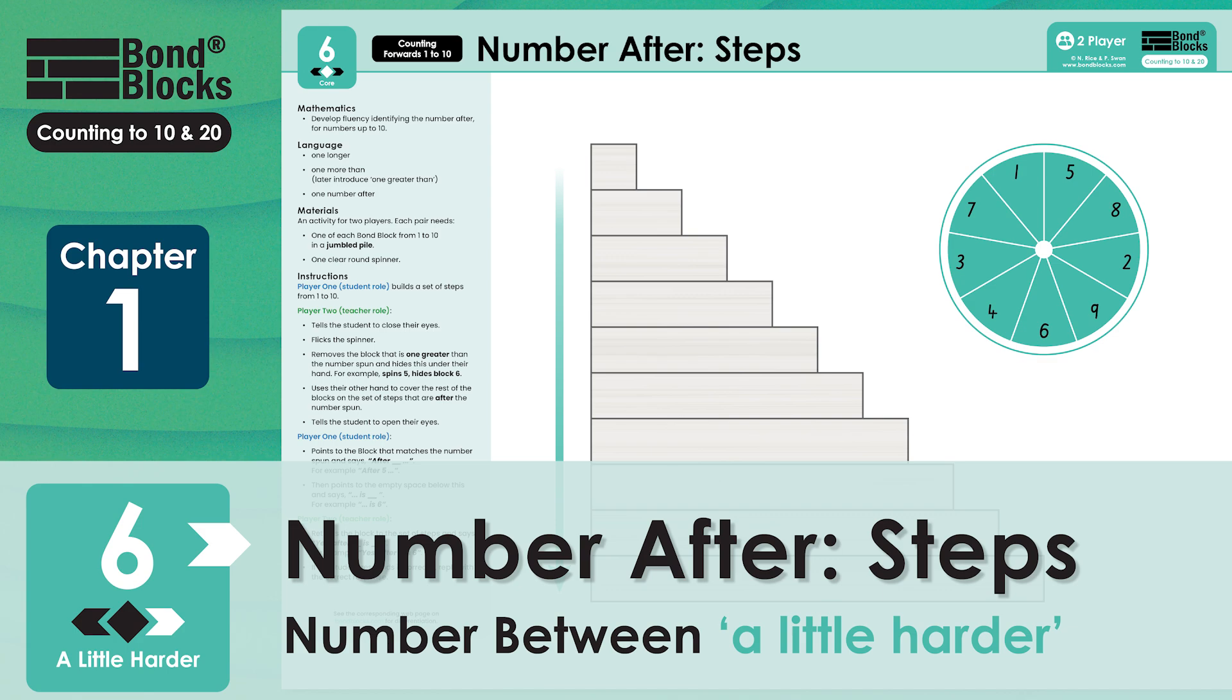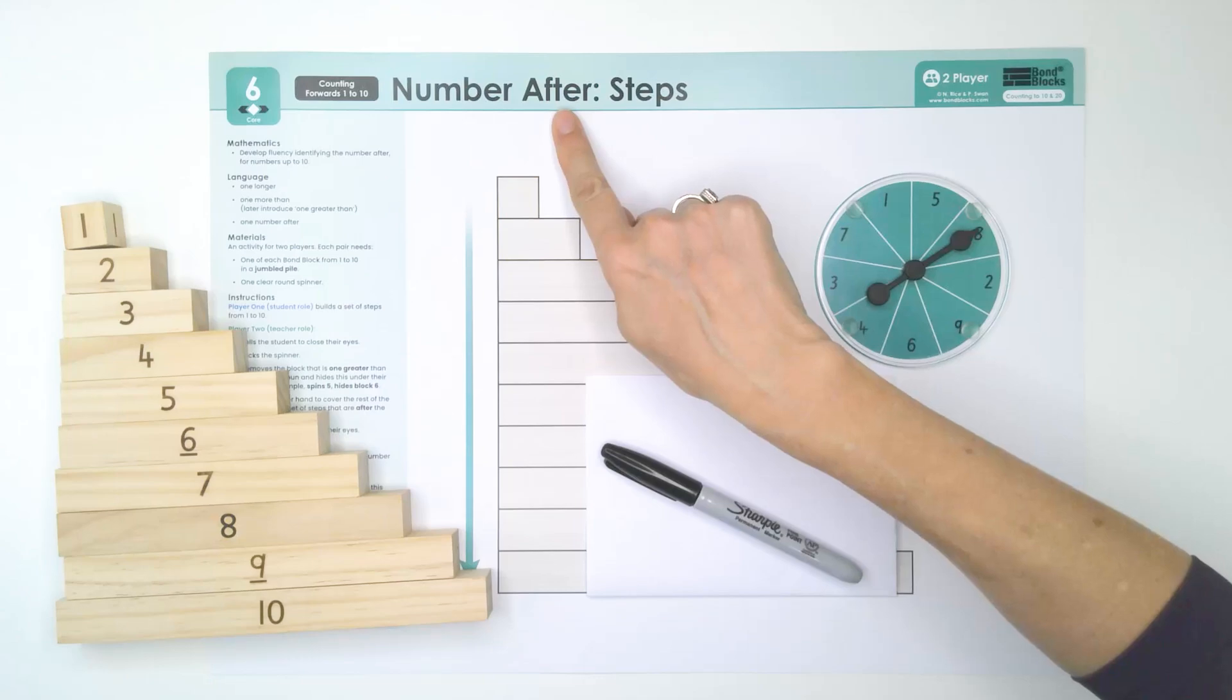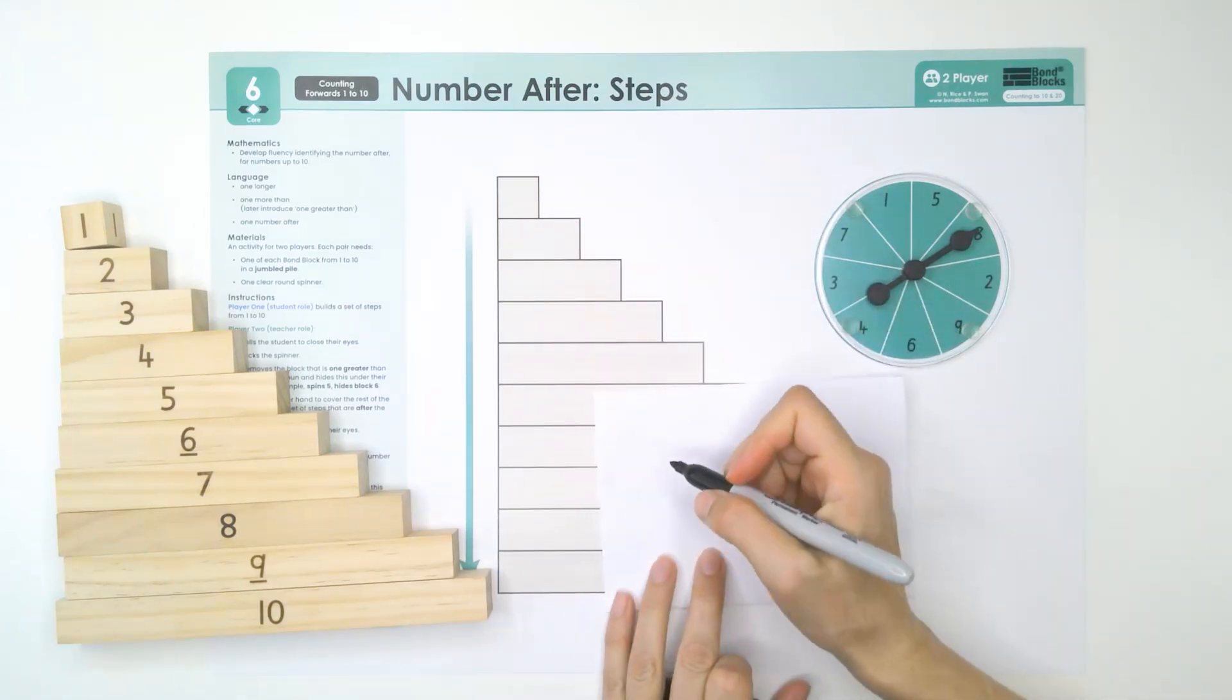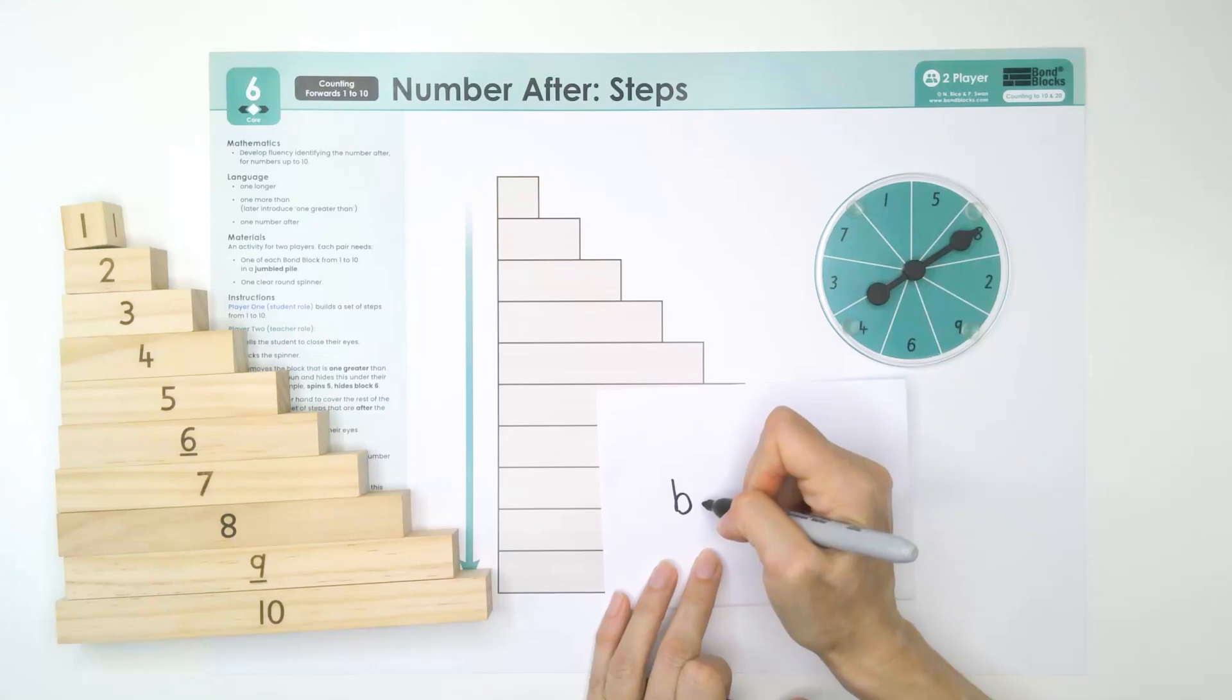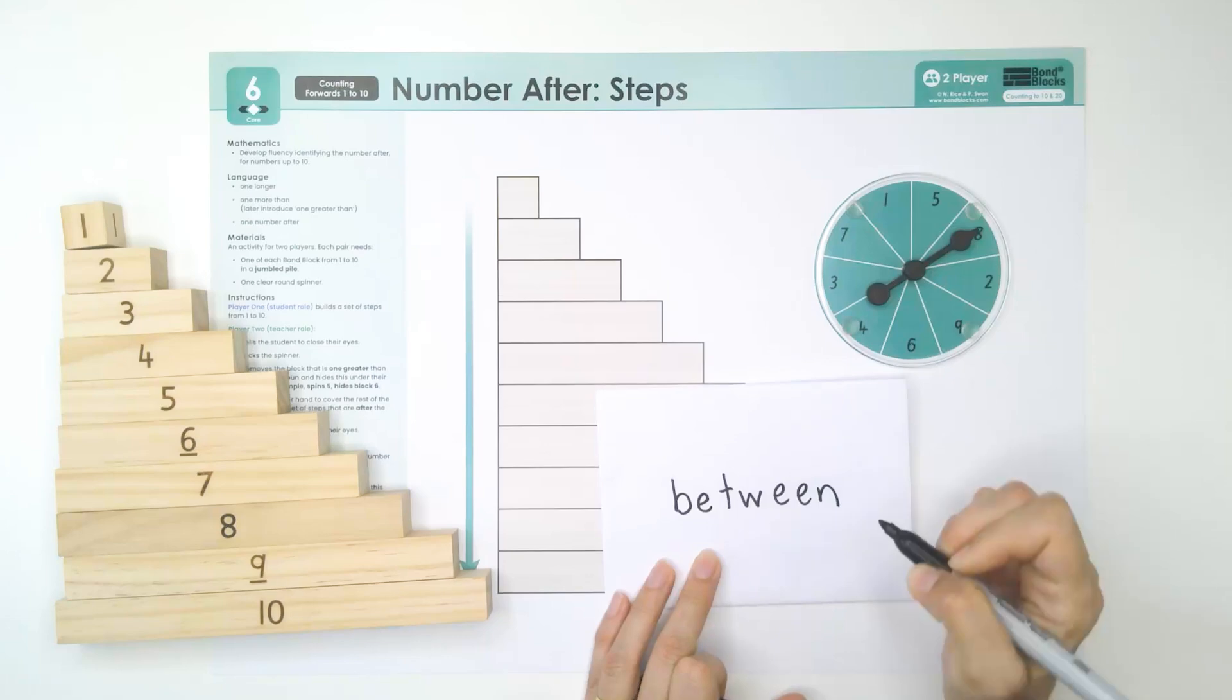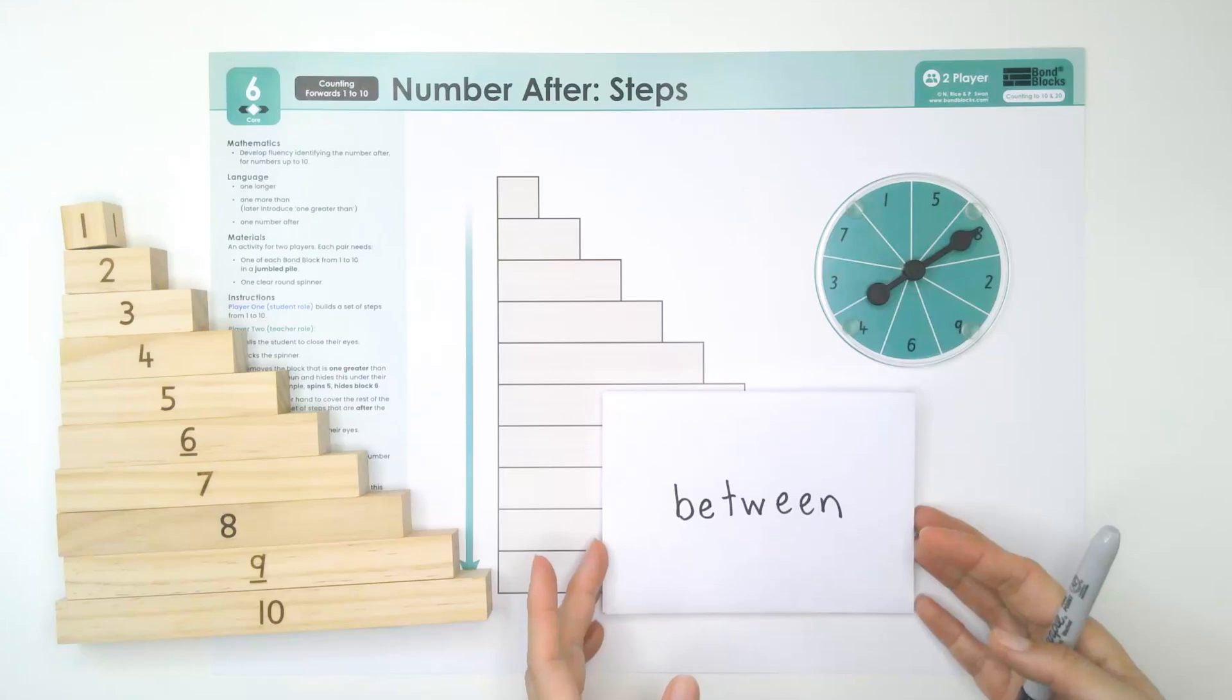Welcome to activity six, a little harder. In this activity, we're not going to be using the word after. We're going to be using this word: between. We're going to be using the word between. Now, between means in the middle of two.